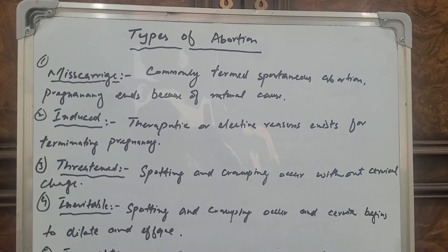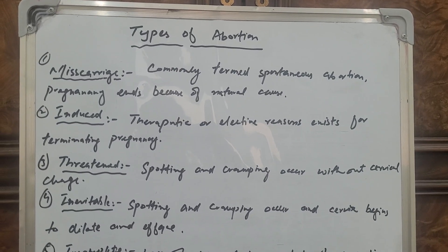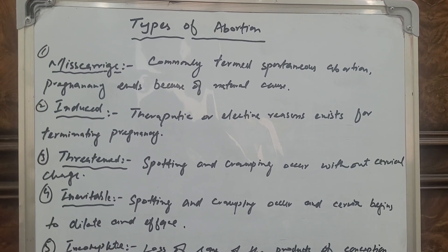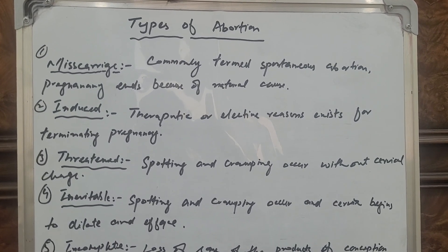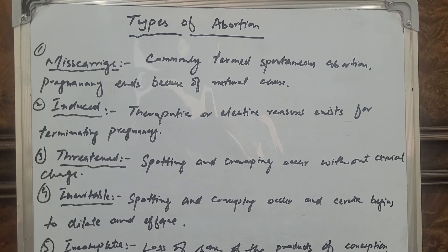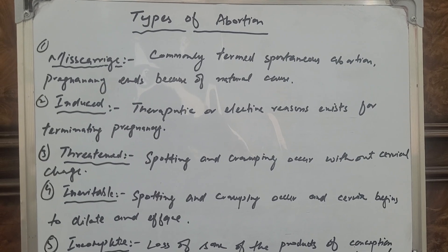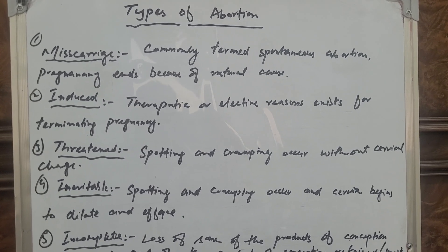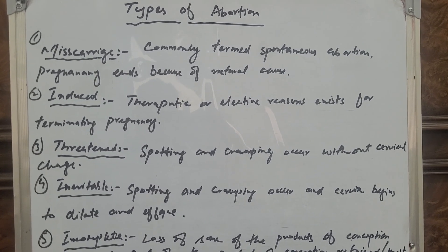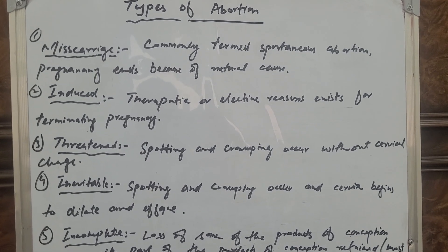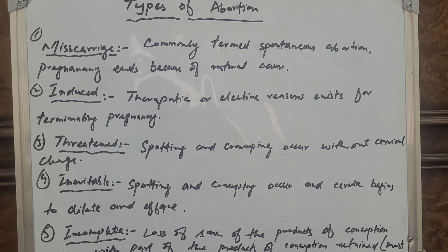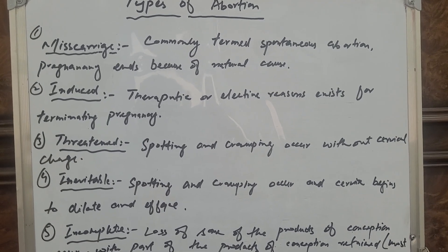Types of Abortion and Miscarriage. First, miscarriage, commonly termed spontaneous abortion, is when a pregnancy ends because of natural causes. Second, induced abortion occurs for therapeutic or elective reasons for terminating a pregnancy.